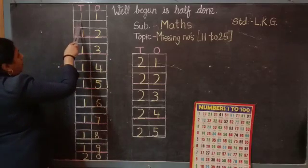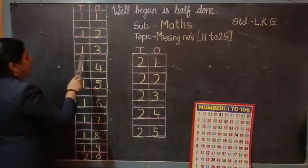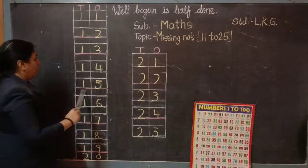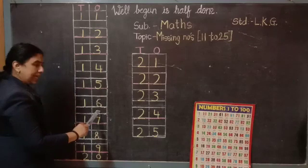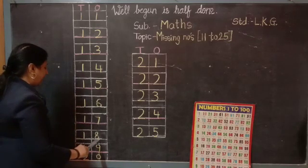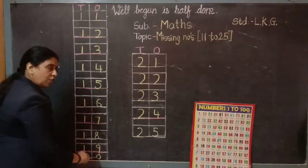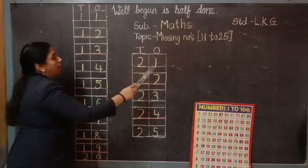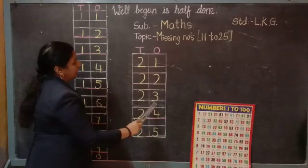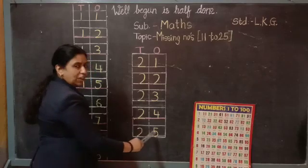So count once again with me. 1-1, 11. 1-2, 12. 1-3, 13. 1-4, 14. 1-5, 15. 1-6, 16. 1-7, 17. 1-8, 18. 1-9, 19. 2-0, 20. 2-1, 21. 2-2, 22. 2-3, 23. 2-4, 24. 2-5, 25.